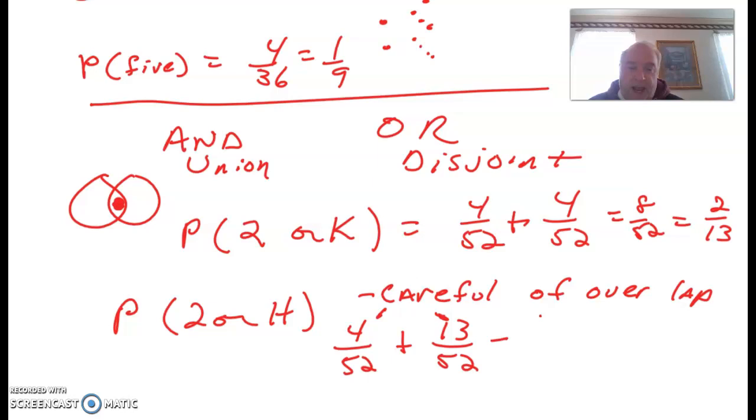So, we're going to back that one out. All right. So, we would get 16 out of 52, which reduces to 4 out of 13. So, basically, if they're not mutually exclusive, we're going to have to back out the overlap.